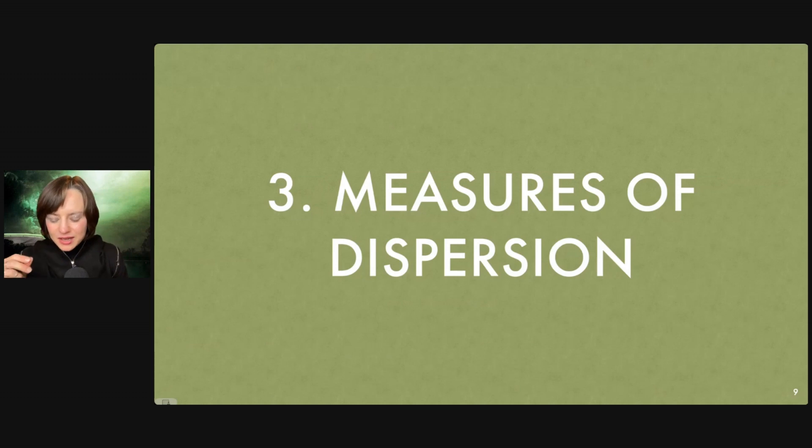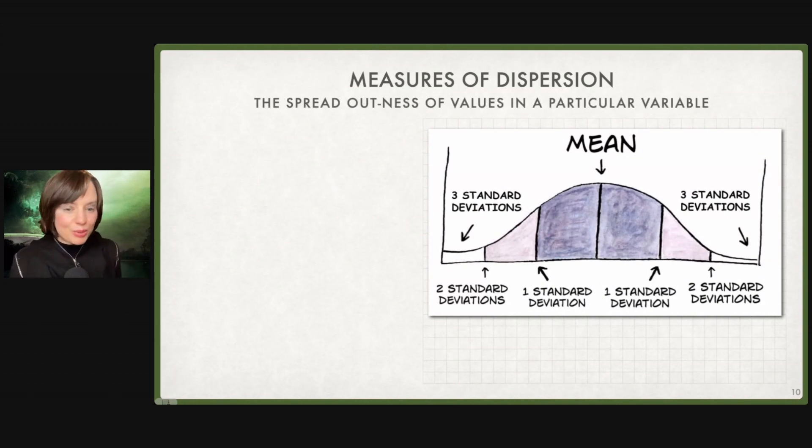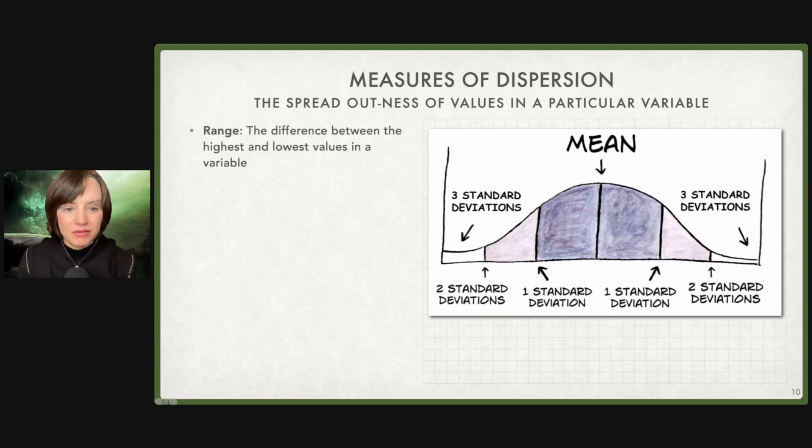Let's get a little bit more interesting: measures of dispersion. This is the area that I wish was default. I wish from now on, anytime someone reports a mean, they also report a measure of dispersion. Specifically, I'm thinking of a standard deviation. A measure of dispersion is how spread out our data is, the spread outness of values in a particular variable.